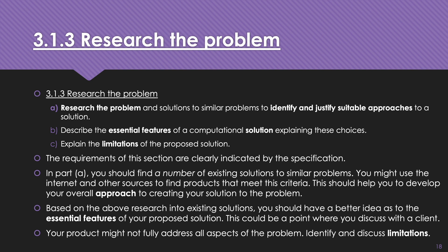Next one we'll be doing is describe the essential features of a computational solution, explaining these choices. So you're going to identify the essential features of your product or your proposed product, hopefully based on the research you've carried out. Explain the limitations of the proposed solution. We are students in a secondary school. We're not going to make something necessarily which has got every single aspect that a commercial product would have, partly because you're working in a school and there's some things you can't do, partly because you don't have enough time and so on. And we'll discuss that.